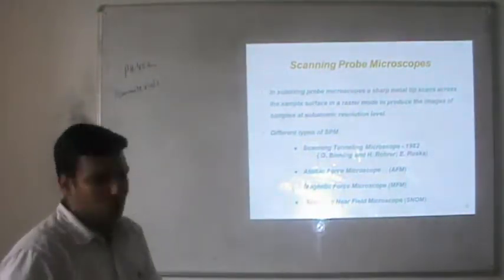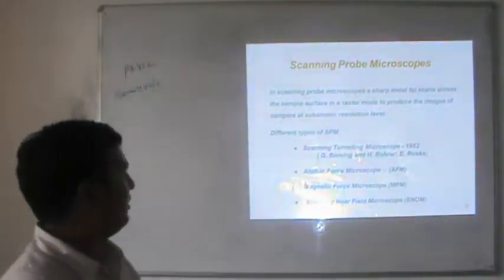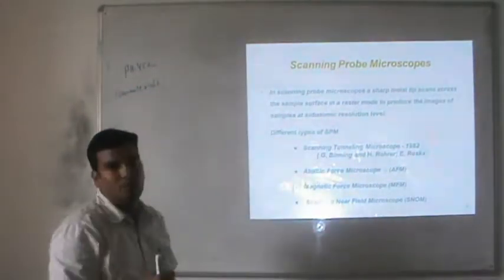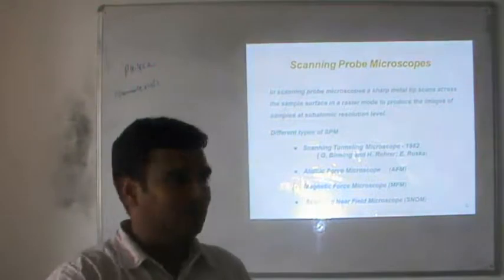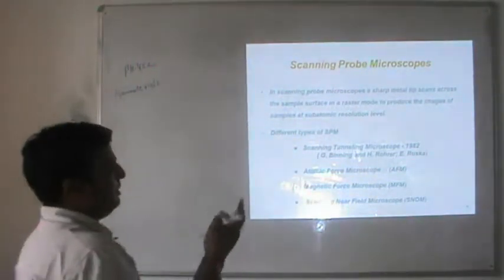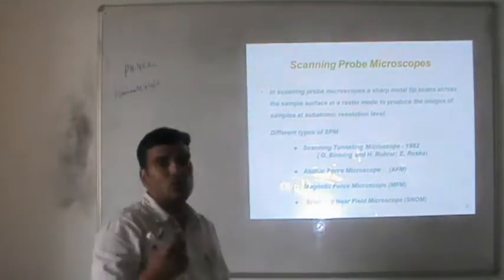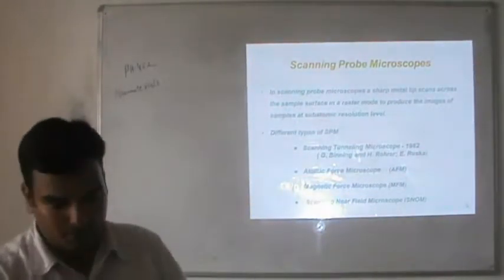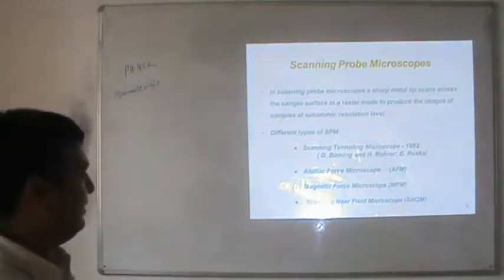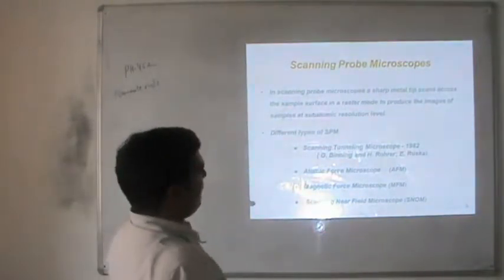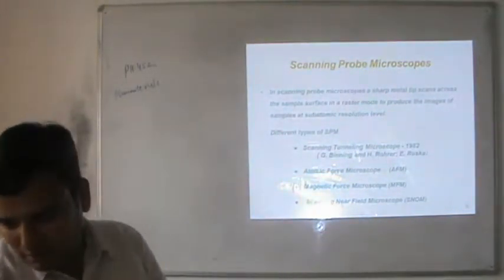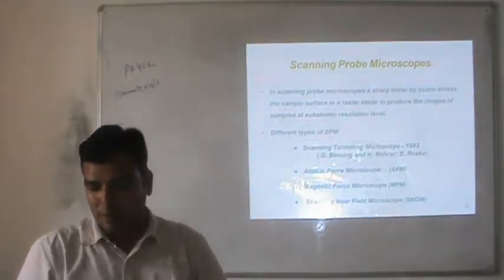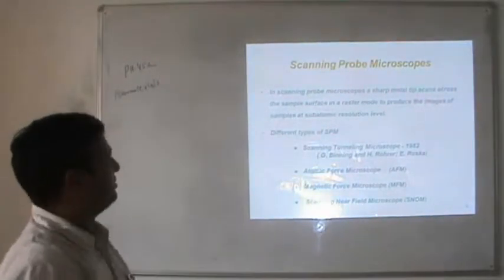In scanning probe microscopes, the most important terms are scanning and probe. A probe is a very thin needle, which may be in the size of a few microns or nanometers. We scan the surface through different techniques. In scanning probe microscopes, sharp metal tips can approach the sample surface in a raster scan to produce images at the sub-atomic resolution level.